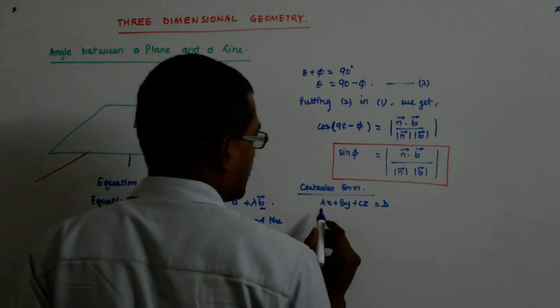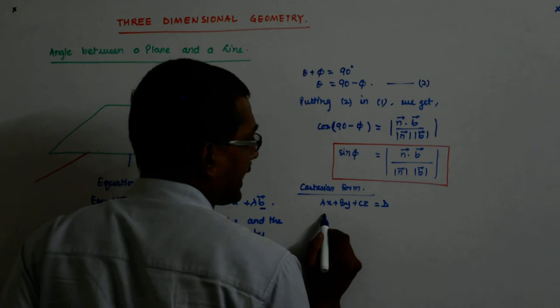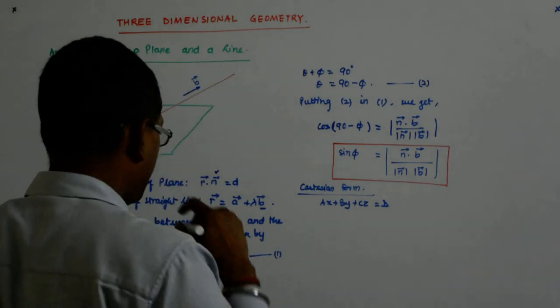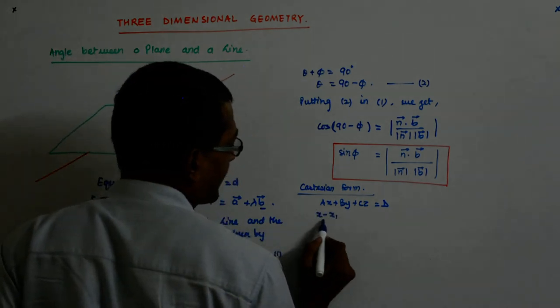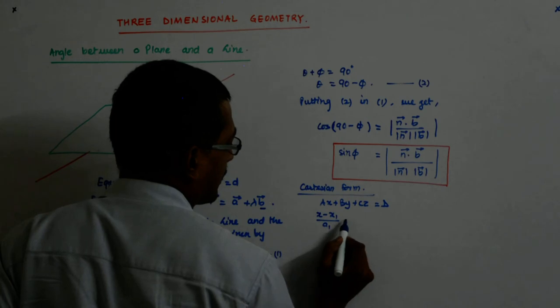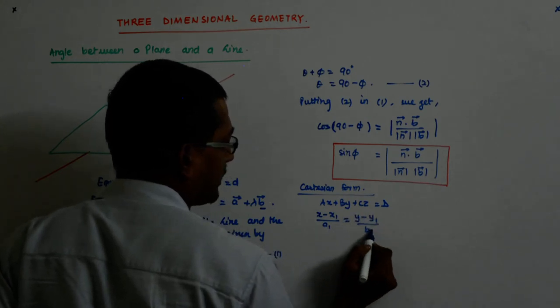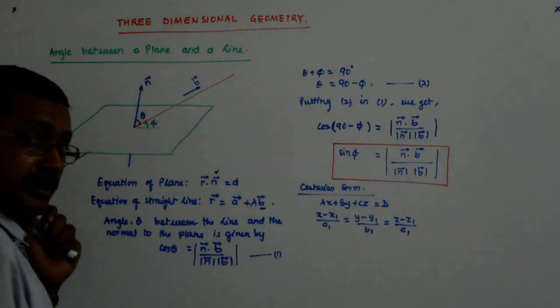I consider the Cartesian form in which if I express my plane as this. And my line as x minus x1 upon a1 is equal to y minus y1 upon b1 is equal to z minus z1 upon c1.